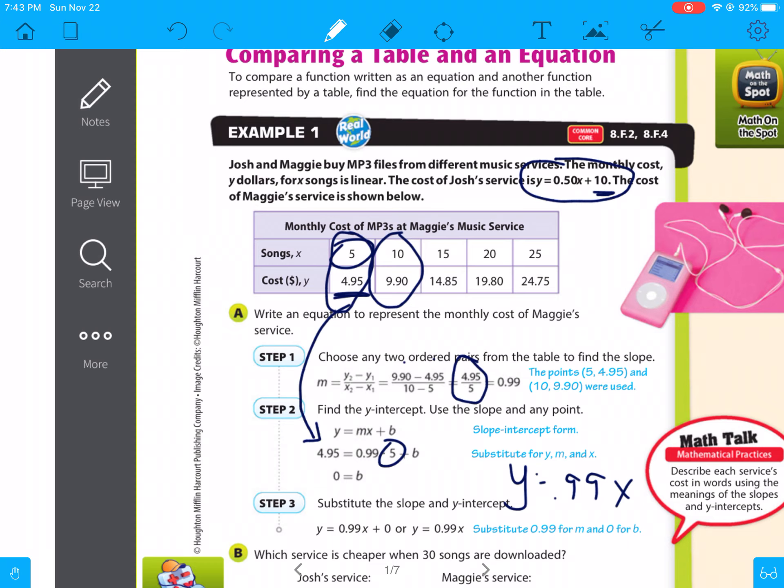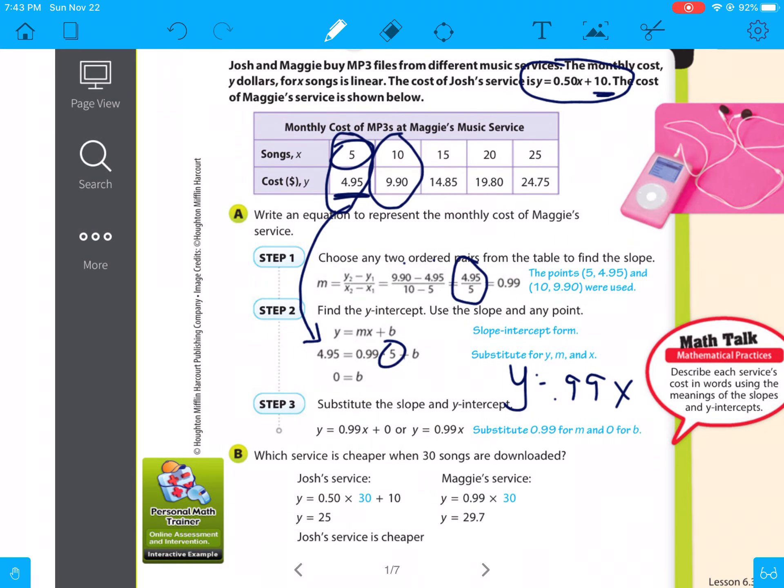Now for part b, it says, which service is cheaper when 30 songs are downloaded? All you're going to have to do is plug 30 songs into the x for Josh's service. So it's the 50 cents per song times 30 plus the $10 service charge. So this is going to be the 0.5 times 30 is 15 plus 10 is 25 bucks.